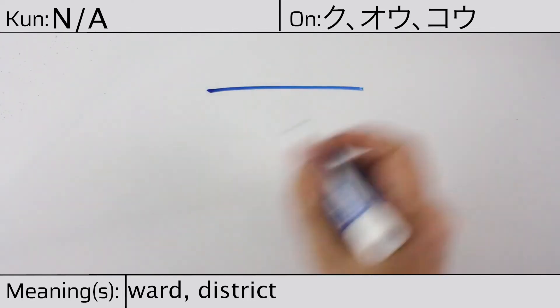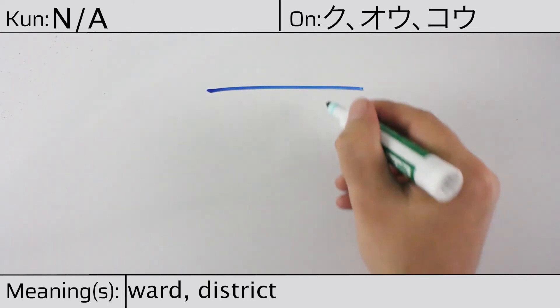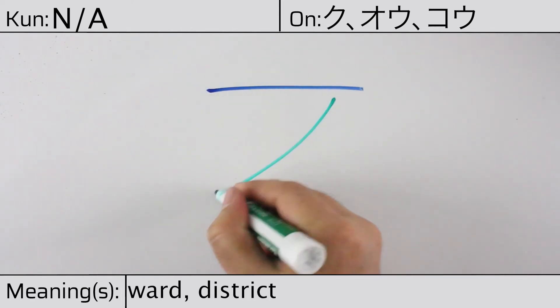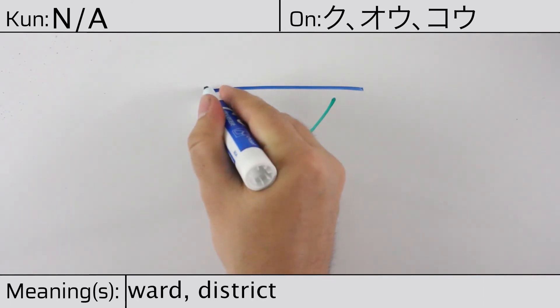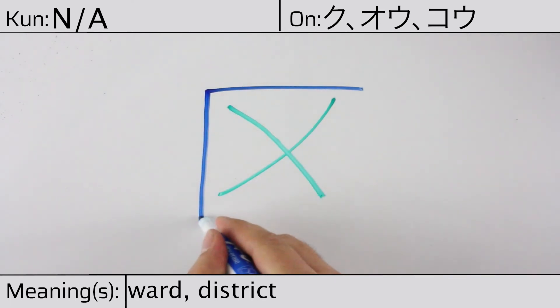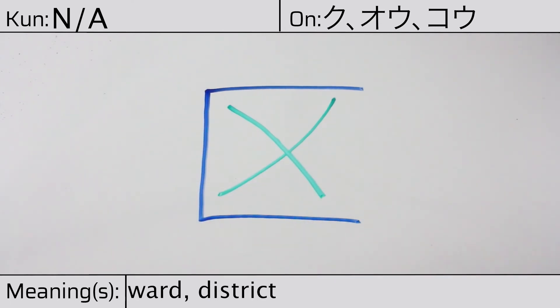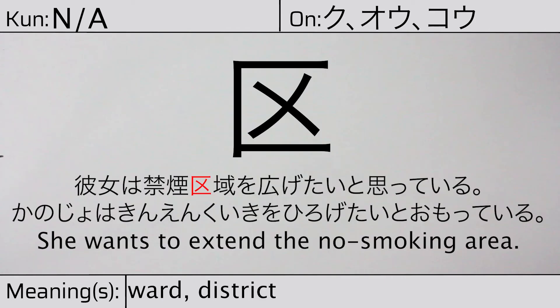You can remember this kanji with this hint: a specific area of a city. Our example sentence is: 彼女は禁煙区域を広げたいと思っている。 She wants to extend the non-smoking area.